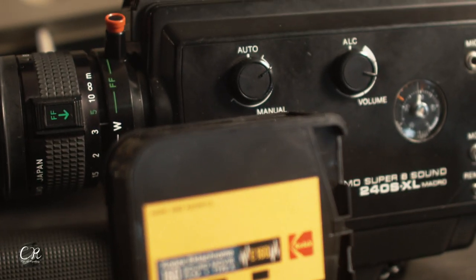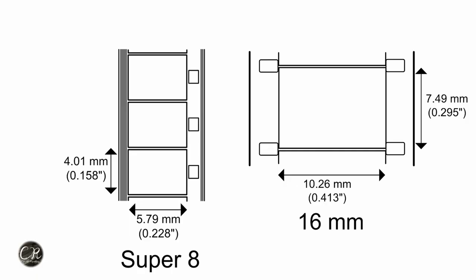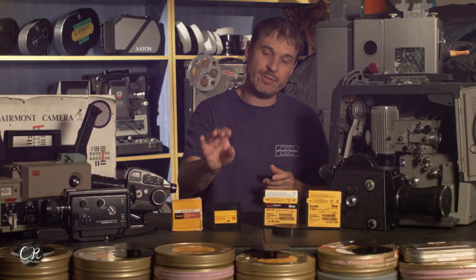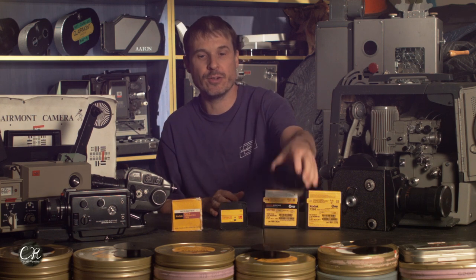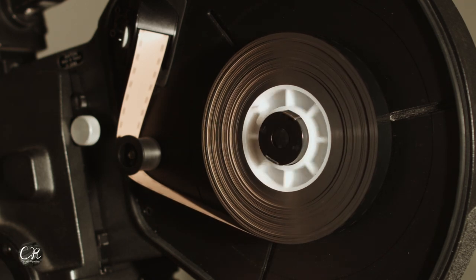Let's talk about the technical differences between Super 8 and 16mm. We obviously know that 16mm is twice the width of Super 8. 16mm also has almost four times the amount of image area of Super 8, which is quite a bit more. Super 8 is in a cartridge, which means you don't have to thread a camera. 16mm is either on a daylight spool or on a core in a can that has to be loaded in a changing bag into a magazine.